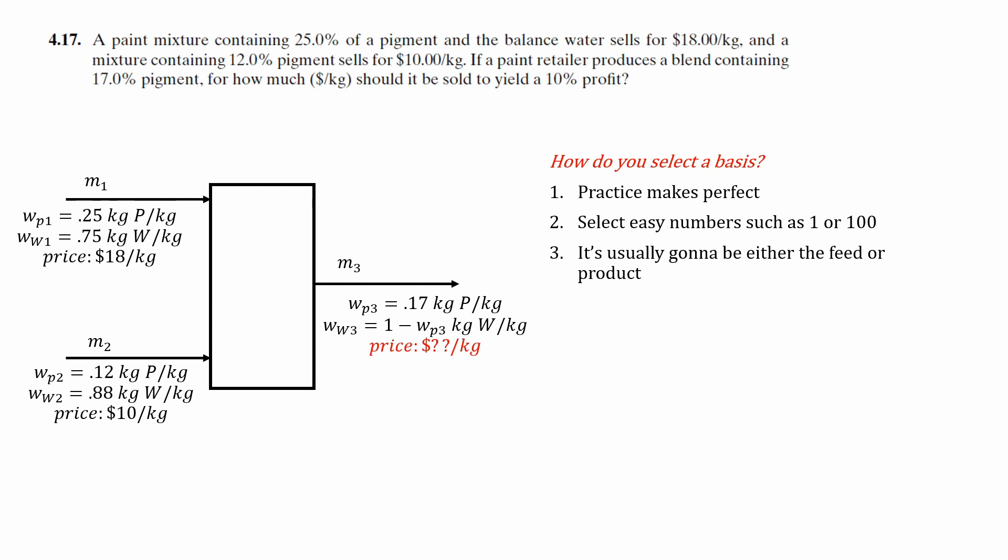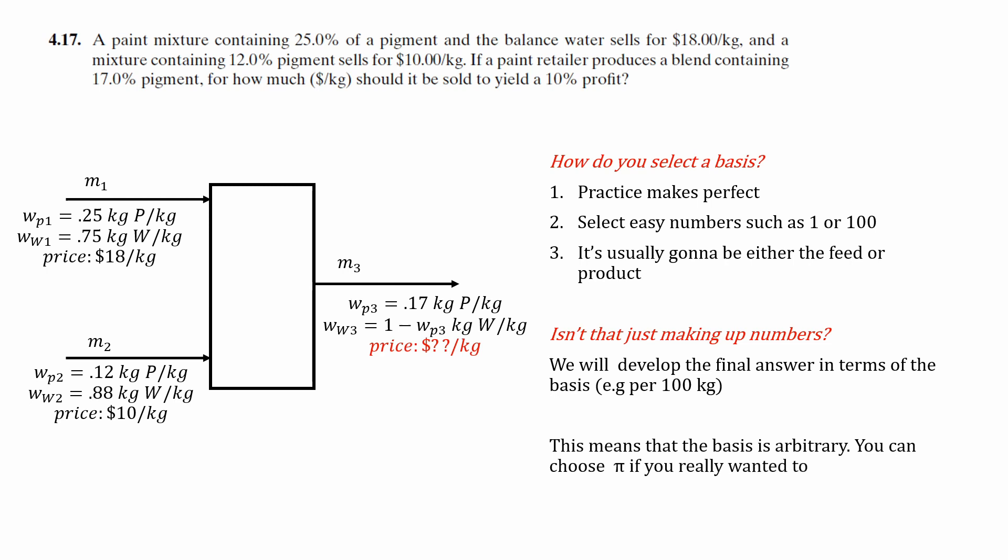So my question as an undergrad when taking this class was, aren't we just making up numbers and pulling them out of nowhere? Well, yes, but then we can actually develop the final answer in terms of the basis. For example, per 100 kilograms. In fact, it doesn't really matter what you choose because at the end, we're going to divide it by the basis we chose anyway. So really, you can choose any arbitrary number. If you really wanted to, you could choose pi or any other random constant.